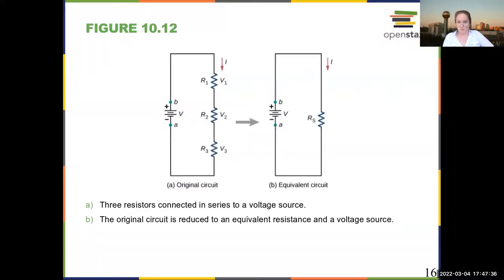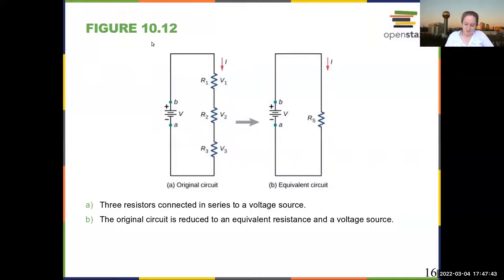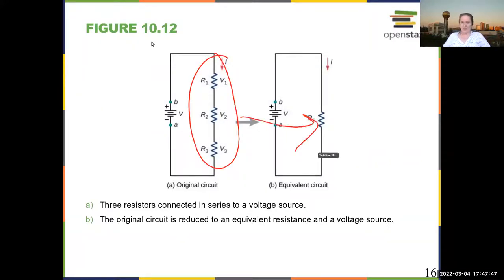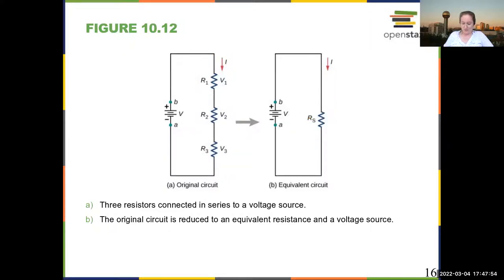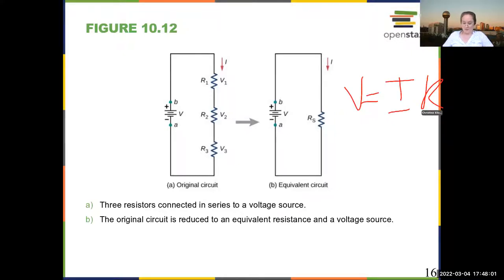When you simplify circuits, you can basically replace these three circuit elements by one circuit element. When you do that, you can redraw the circuit and then use Ohm's law typically to figure out what the current is in that circuit.